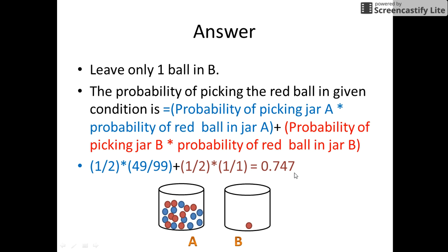So we can say that my friend would draw a red ball, and the chances of drawing a red ball would increase from 0.5 to 0.747 by transferring all 49 red balls from jar B to jar A. Keep watching and stay tuned.